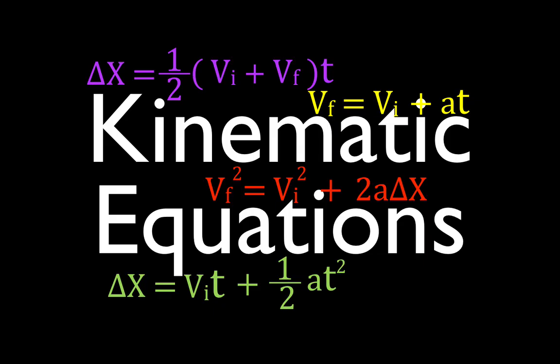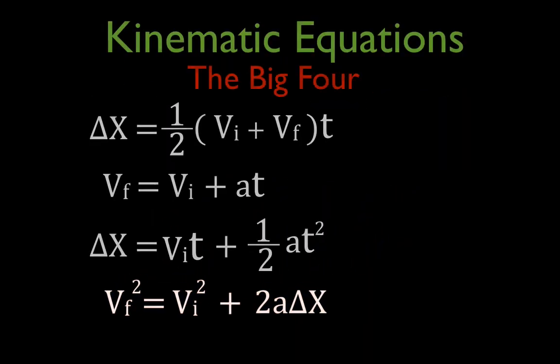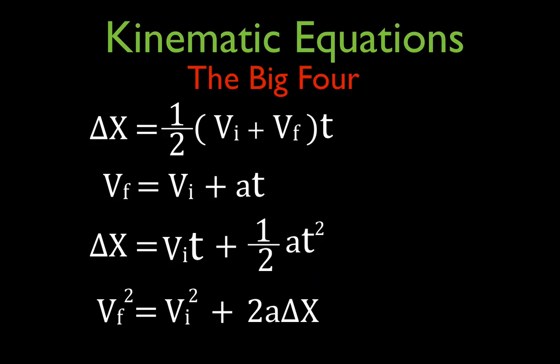In today's video I am going to go over how we use the kinematic equations in physics to analyze the one-dimensional horizontal motion of objects. These are the four kinematic equations — sometimes I like to call them the big four. It's important to remember that these equations are used when we have constant acceleration, when the acceleration is staying the same. The velocity will be either increasing or decreasing, but the acceleration stays constant.